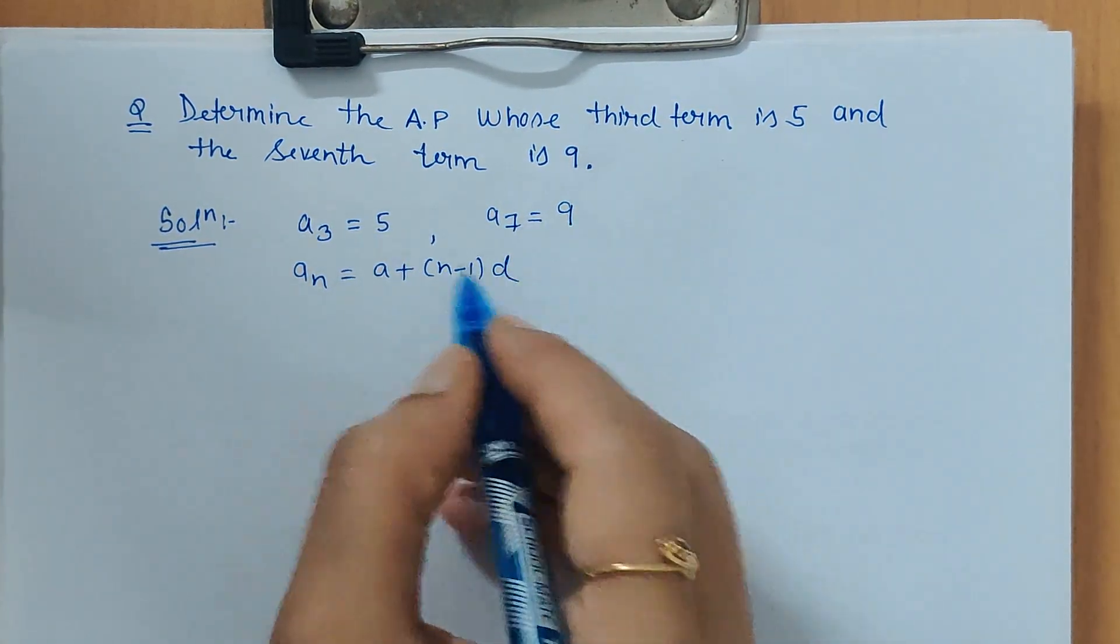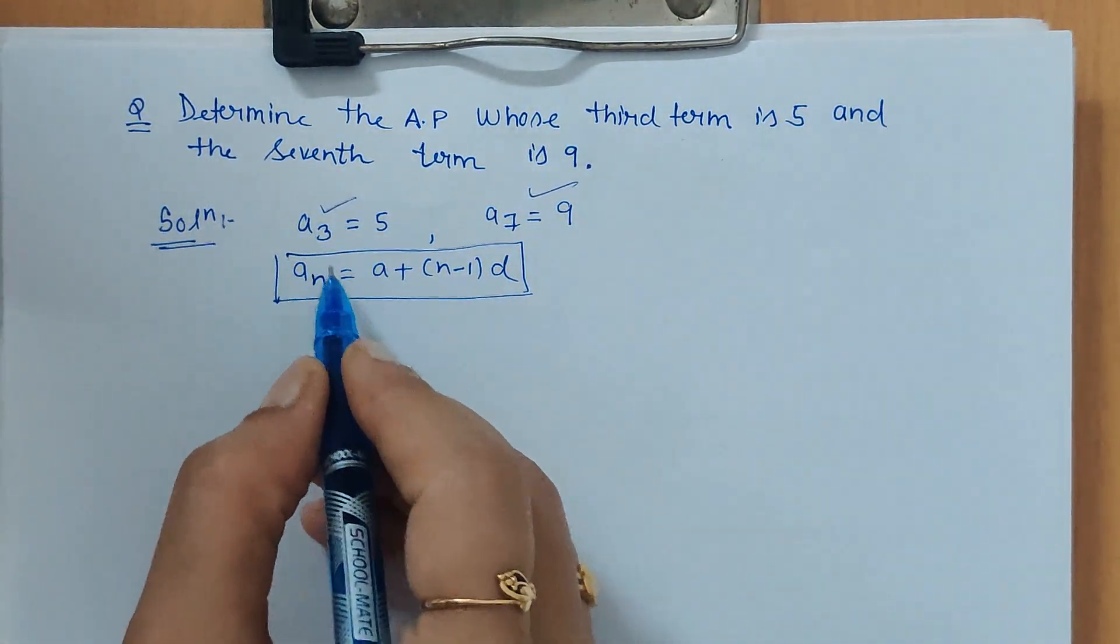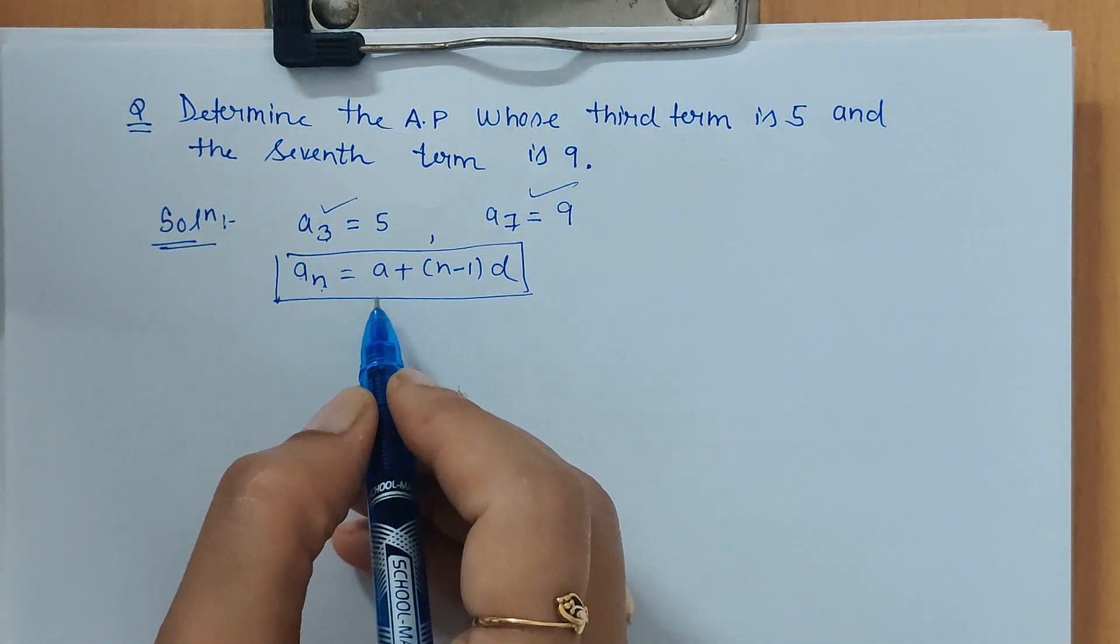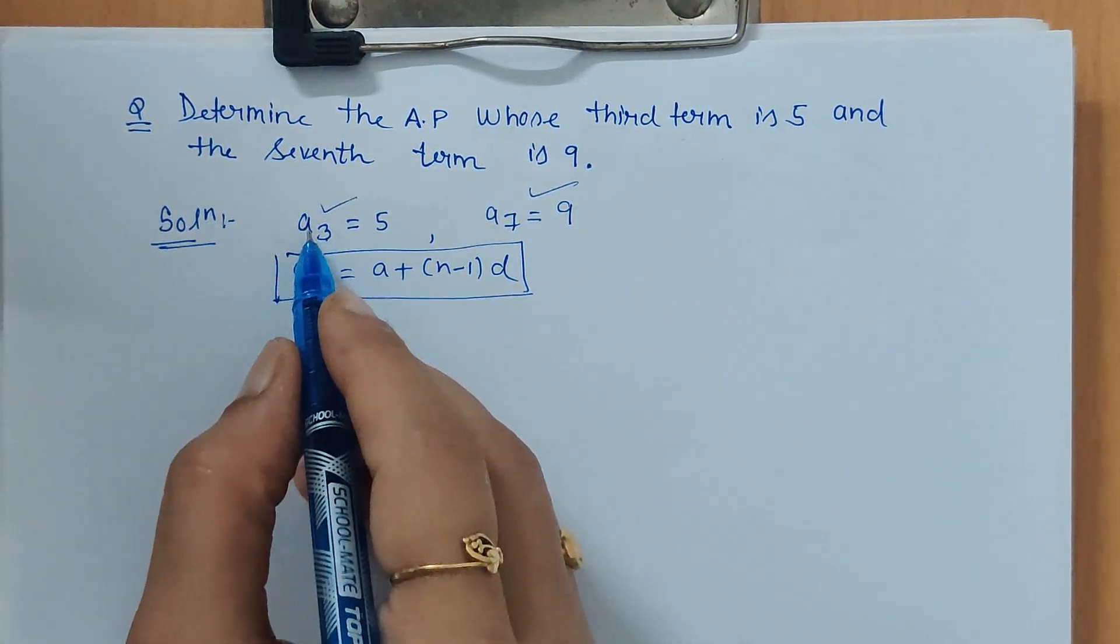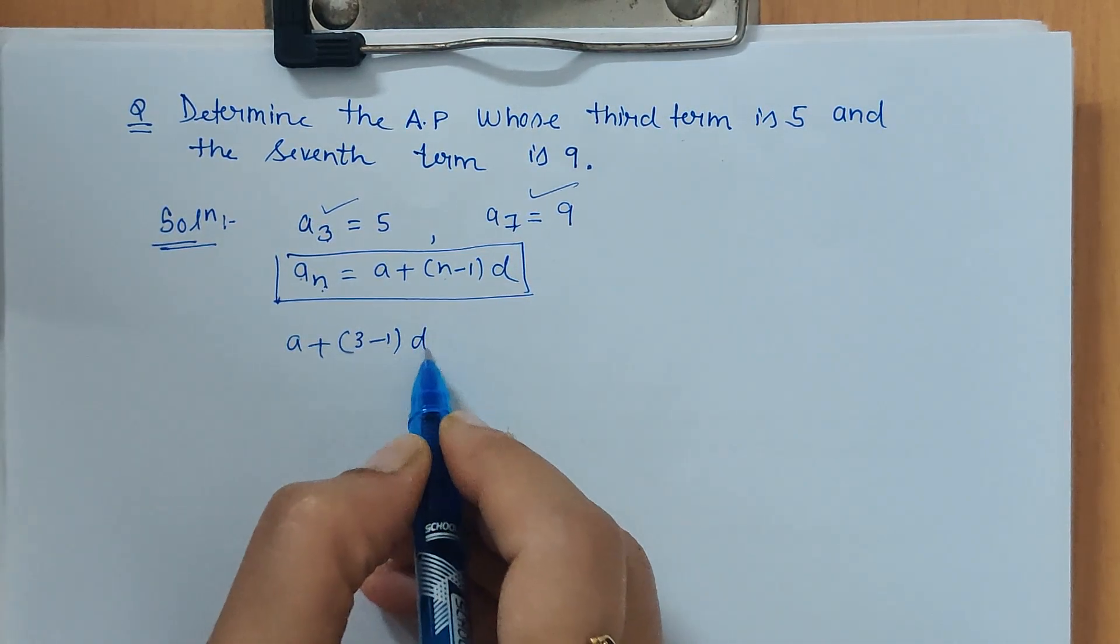Now let's put this in the formula. Here an, where n is 3, will be a plus (3 minus 1) times d is equal to 5. And a plus (7 minus 1) times d is equal to 9.